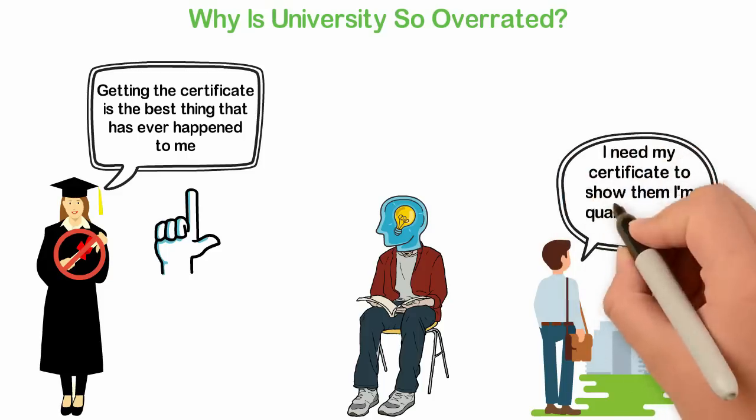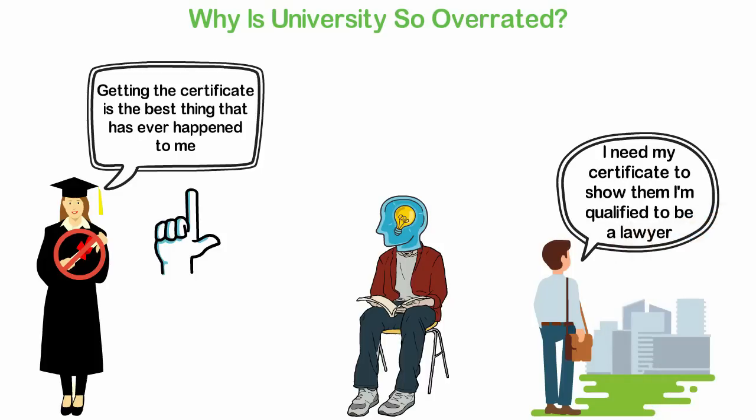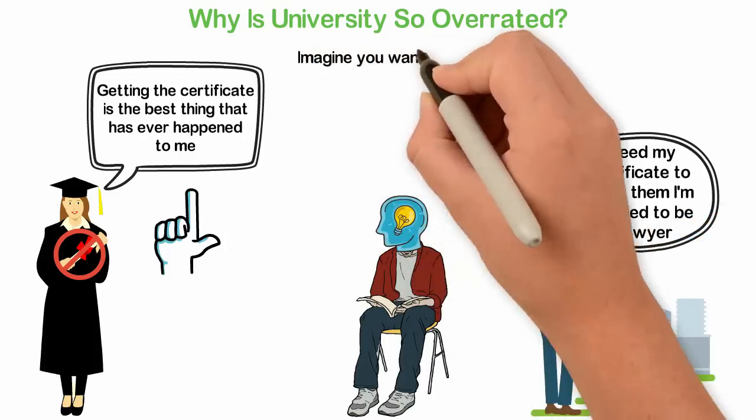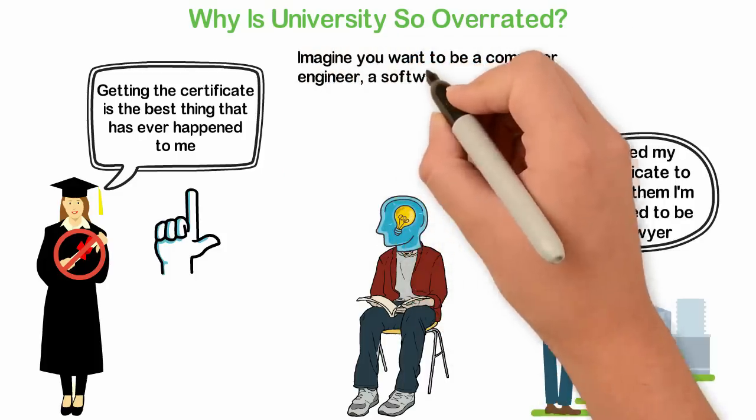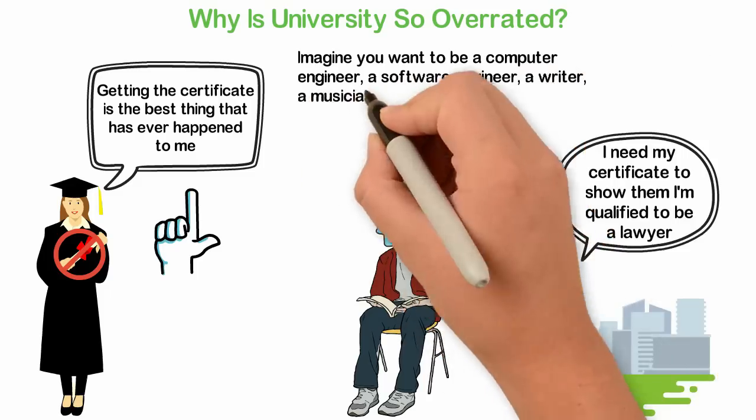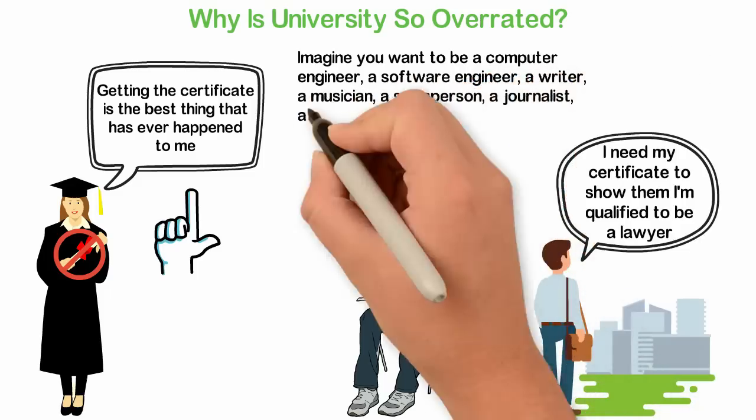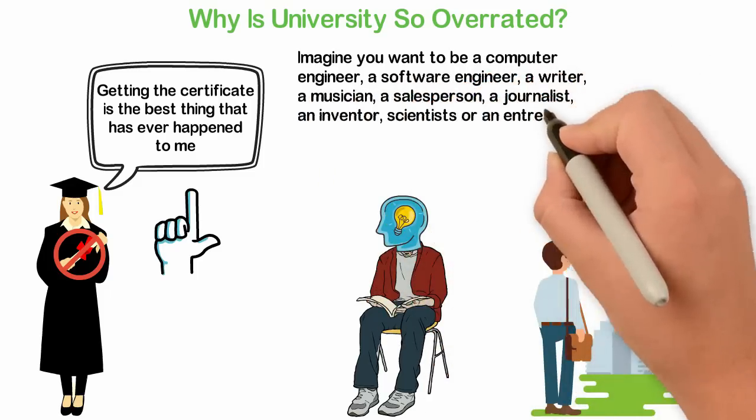But for most of us, education, not a degree, is the most important thing. Imagine you want to be a computer engineer, a software engineer, a writer, a musician, a salesperson, a journalist, an inventor, scientist or an entrepreneur.